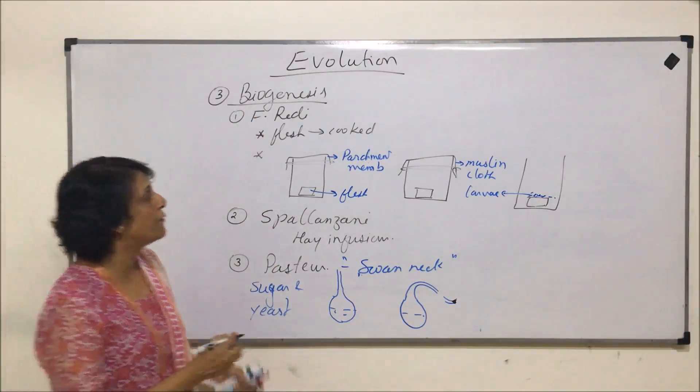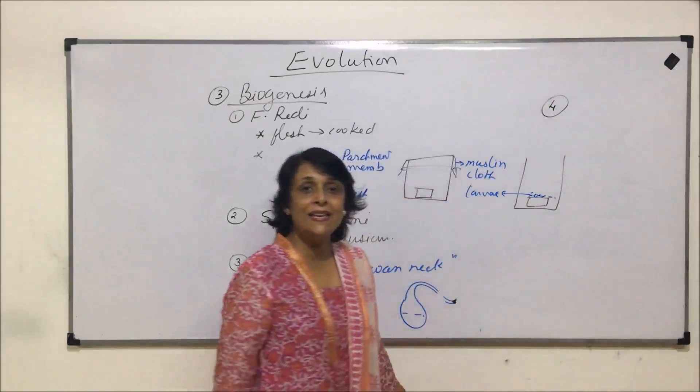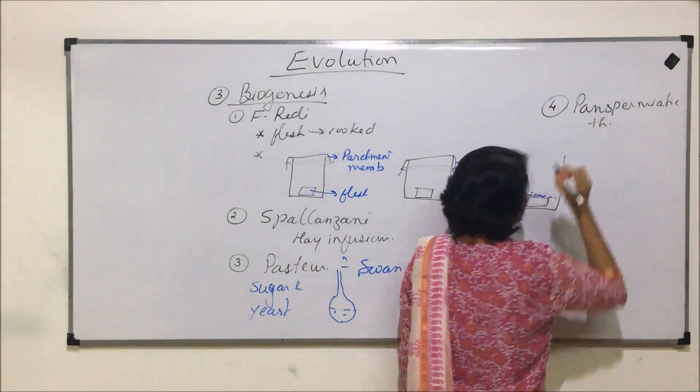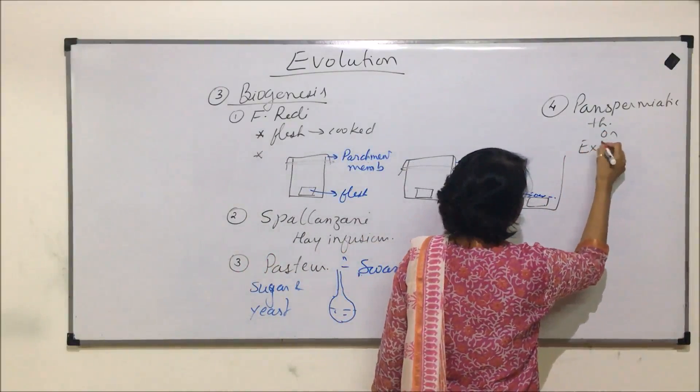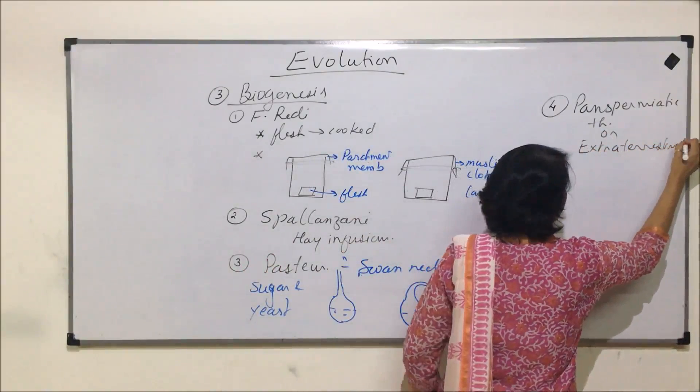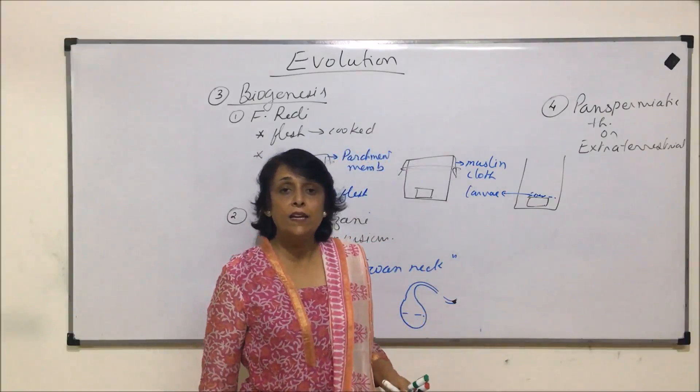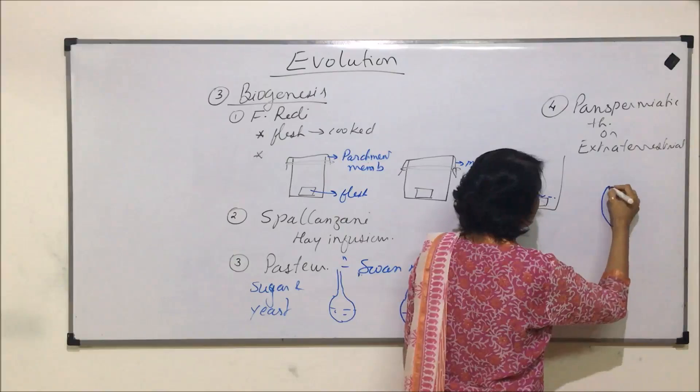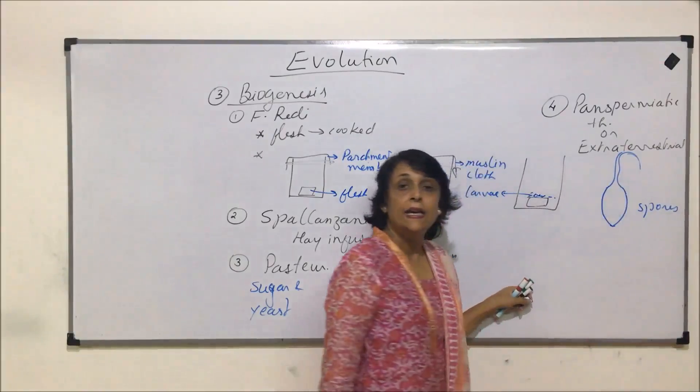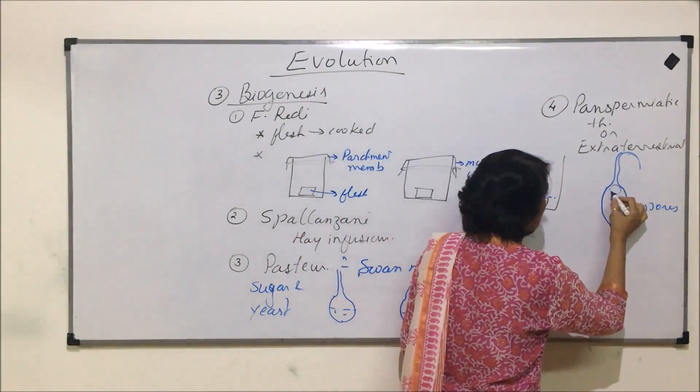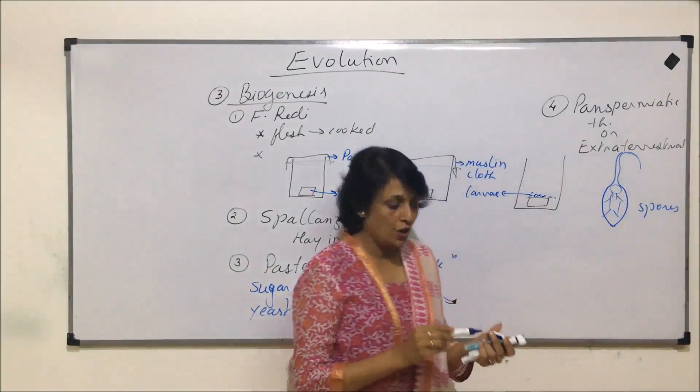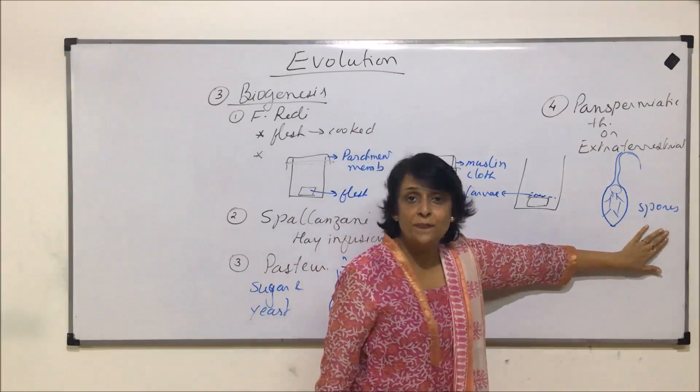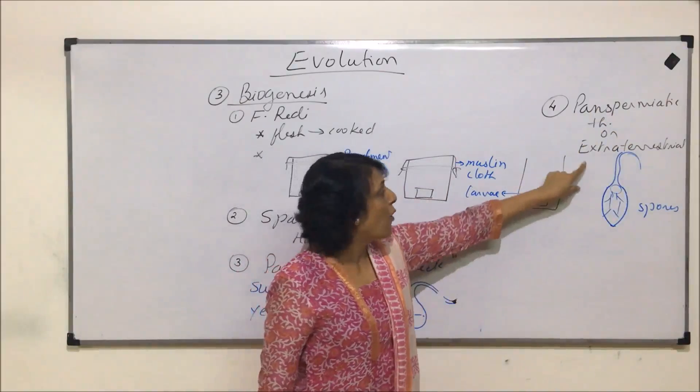That means life originates from pre-existing life forms. The fourth theory is known as panspermia theory, also known as extraterrestrial theory. Some scientists believe that life originated in space and it came on earth in the form of some structures which were called spores. And in this spore thing they had actually made a human figure kind of a structure. So it was said that this life originated in space and it came to earth in the form of spores. And this is known as panspermia theory or extraterrestrial.